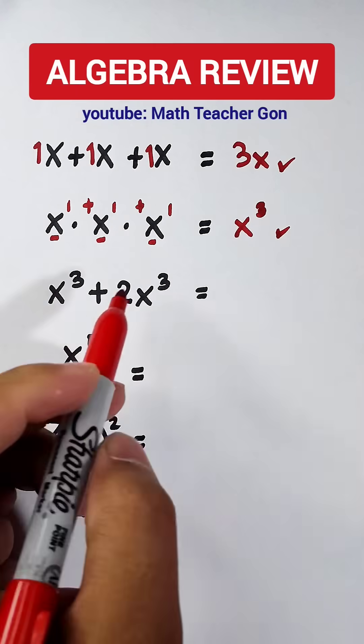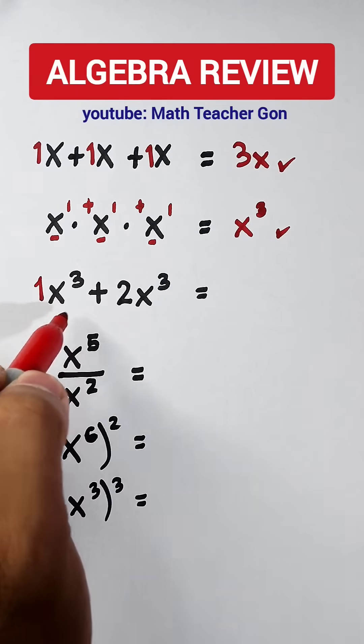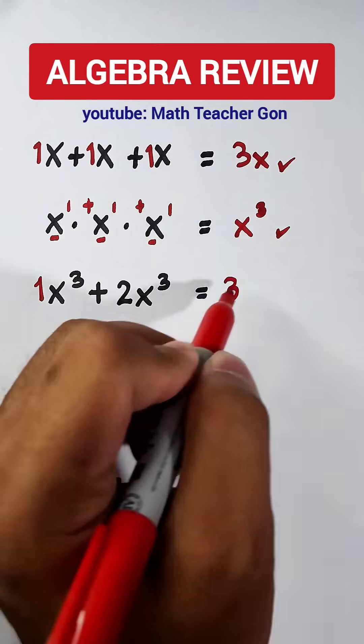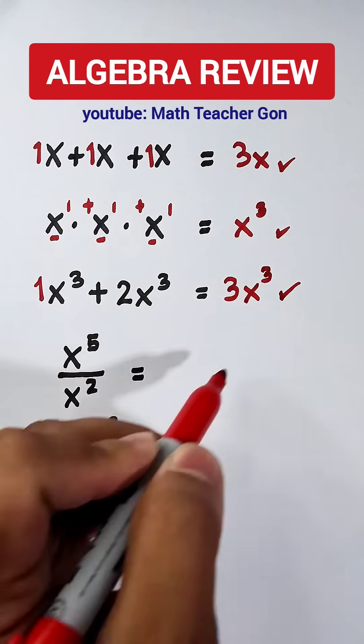x cubed plus two x cubed. There's an invisible one here, same variable and exponent, add the numbers one plus two, that is three, copy x cubed. So the answer is three x cubed.